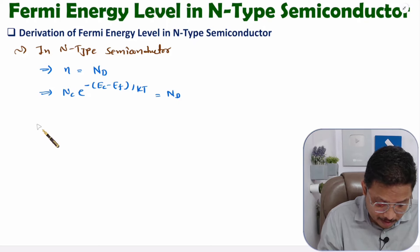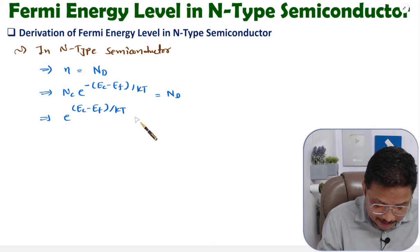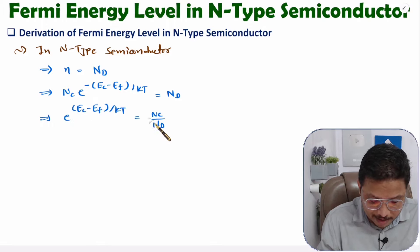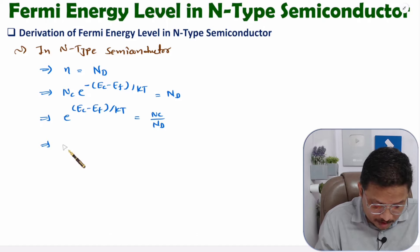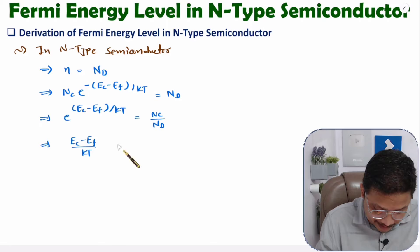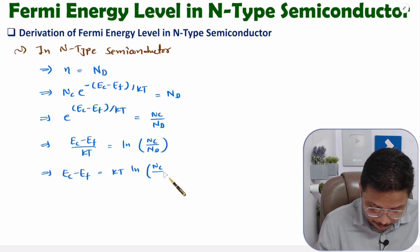Now, if I take Nc to the other side, I can write E to the power term equals Nc by Nd. The reason is Nc goes to the denominator, and converting the exponent from minus to plus gives Nc by Nd. Now, to express this in terms of Ec minus Ef, let us take natural log on both sides. So we have (Ec minus Ef) divided by KT equals ln(Nc/Nd), which gives us Ec minus Ef equals KT into ln(Nc/Nd).